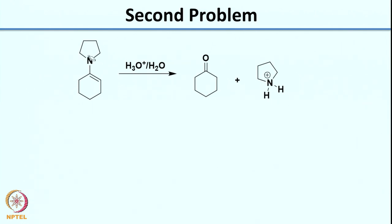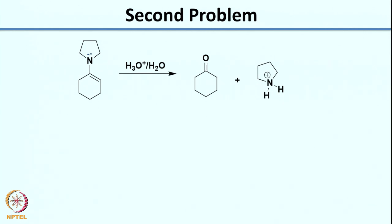One thing I want to tell you when you write mechanisms: do not feel afraid to push arrows and write a possible mechanism just like I did now, because even if you make a mistake it is fine — you can go back and write another pathway. But it is very important that you actually write the reaction pathway you first think of. Now for the second case: I put the lone pair here, and I can think of the lone pair coming in because it is in conjugation with the double bond, then the double bond grabbing a proton.